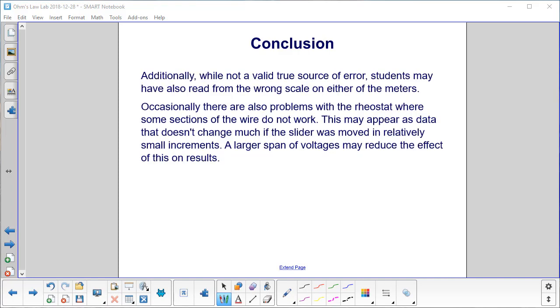Additionally, while not a valid true source of error, students may have also read from the wrong scale on either of the meters. Occasionally, there are problems with the rheostat where some sections of the wire do not work. This may appear as data that doesn't change much if the slider was moved in relatively small increments. A larger span of voltages may reduce the effect of this on your results.